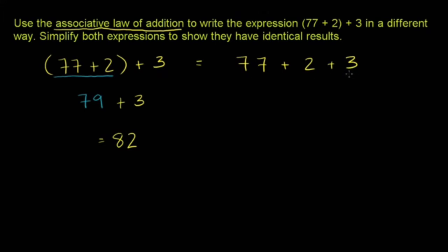If we have no parentheses here, this is actually the same thing as this over here. Because we'd go 77 plus 2 is 79, plus 3 is 82. But the associative law tells us, well,